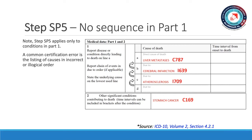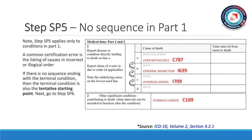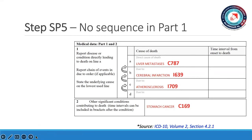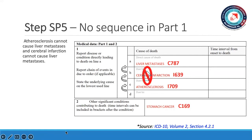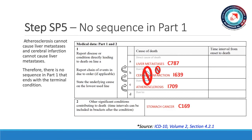Finally, let's review step SP5: no sequence in Part 1. Note that step SP5 applies only to conditions in Part 1. A common certification error is the listing of causes in incorrect or illogical order. If there is no sequence ending with a terminal condition, then the terminal condition is also the tentative starting point. Next, go to step SP6. Take a look at the example on the screen: atherosclerosis cannot cause liver metastasis and cerebral infarction cannot cause liver metastasis. Therefore, there is no sequence in Part 1 that ends with a terminal condition. Select the terminal condition, liver metastasis, as the tentative starting point.